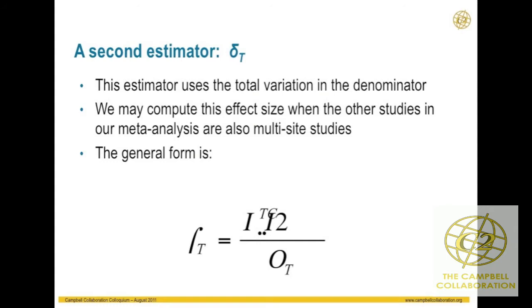We have a second estimator called delta-T. The numerators of these don't change — it's the denominator that does. Delta-T is the difference in the two population means divided by the total variation sigma-squared-T. When all of our other studies are also multi-site studies, we might want to use this particular one.